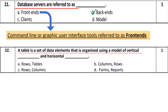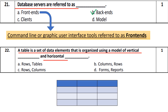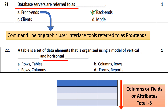Let's go to question number 22. A table is a set of data elements organized using a model of vertical and horizontal. The table, as shown here in the picture — if we talk about vertically, we call them columns. The other names of the column are fields, attributes, etc.